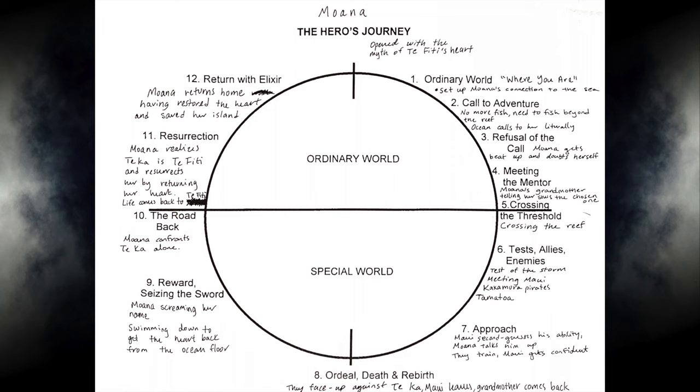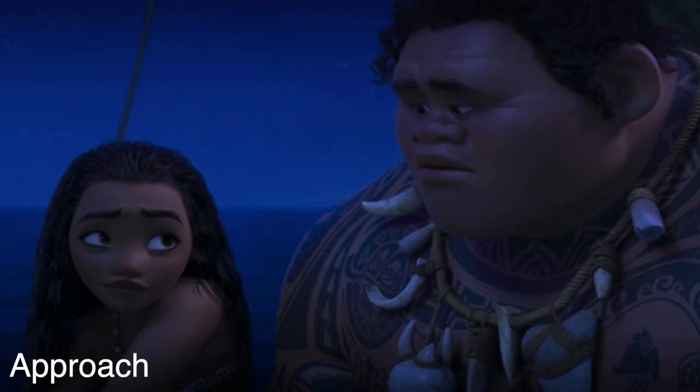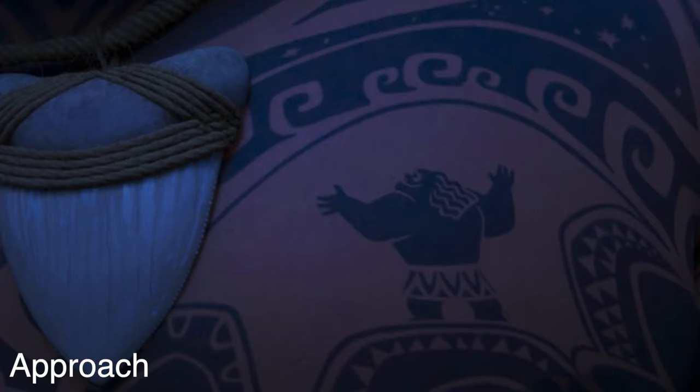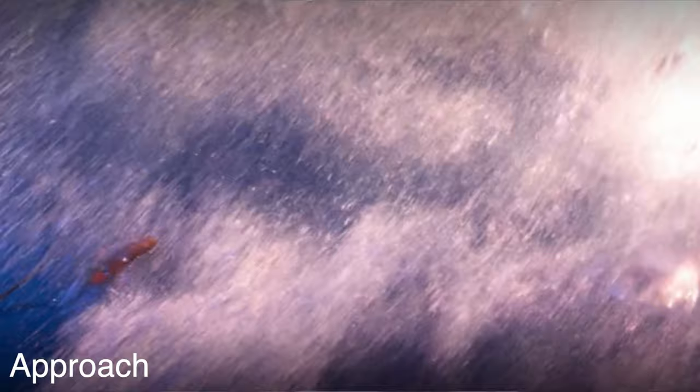This leads to the seventh plot point, which is the approach. The approach is the section where your hero prepares to confront the villain or reach the location where the final goal of the quest is located. This happens when Moana and Maui are preparing to face Te Ka. Maui second-guesses his ability because he isn't able to shapeshift the way he wants to, and Moana gives him a pep talk. They train together in a montage where Maui gets his confidence back, and then they are ready to face Te Ka.